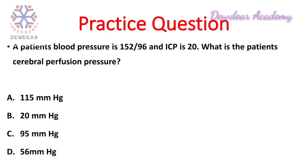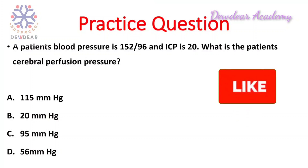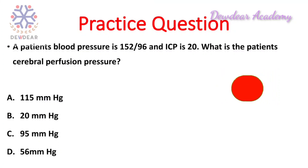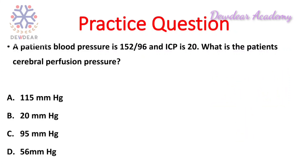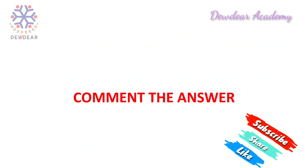Here is a practice question: a patient's blood pressure is 152/96 mmHg and ICP is 20 mmHg. What is the patient's cerebral perfusion pressure? The options are: 115, 20, 95, or 56 millimeters of mercury. Apply the equation CPP = MAP − ICP, where MAP = (SBP + 2 × DBP) / 3, and comment your answer below.